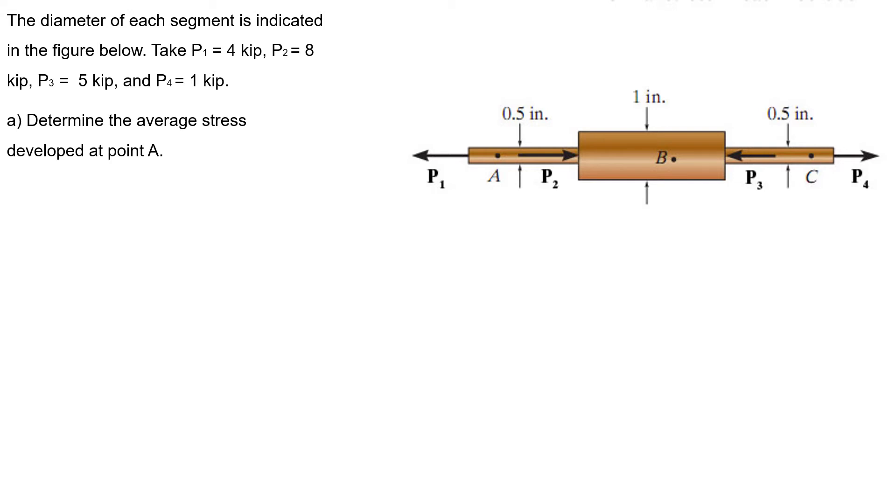Hello, let's start homework 6. This is the first question. The diameter of each segment is indicated in the figure below. Take P1 = 4 kip, P2 = 8 kip, P3 = 5 kip, and P4 = 1 kip. Determine the average stress developed at point A.